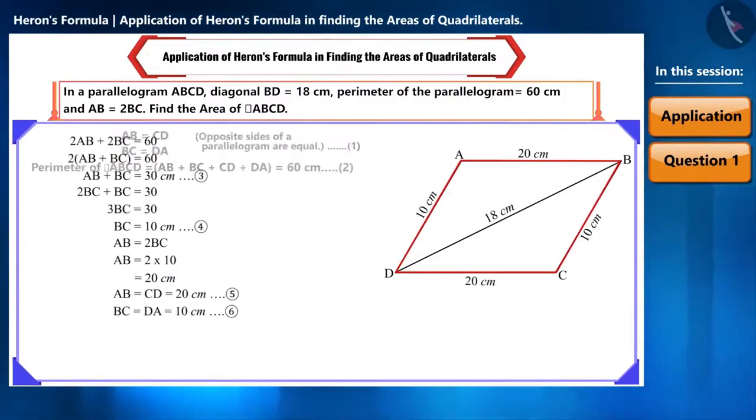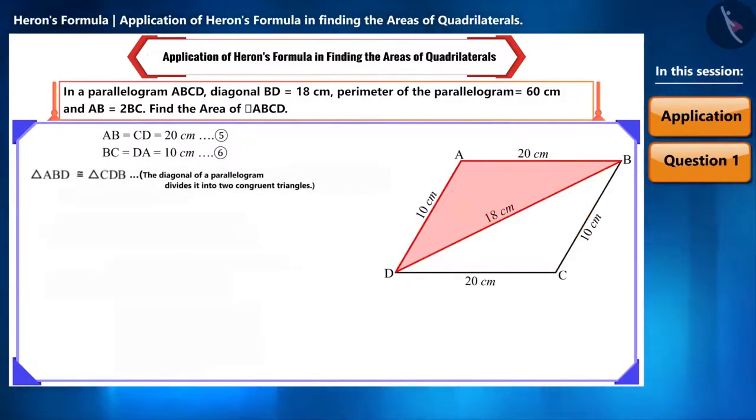Now, we will find the area of this parallelogram. Since we are not given any information about its height, we cannot use the formula base multiplied by height. But we know that the diagonal of a parallelogram divides it into two congruent triangles. This means their areas will be equal. If we get the area of any one of these triangles, then we can double it to find the area of the parallelogram.